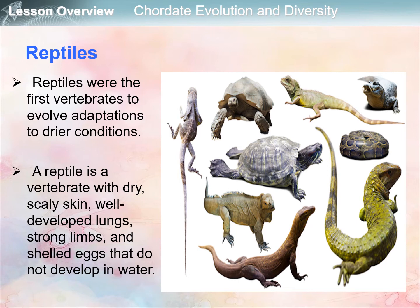Now let's move on to reptiles. Reptiles were the first vertebrates to evolve adaptations to drier conditions. A reptile is a vertebrate with dry, scaly skin, well-developed lungs, strong limbs — they don't have gills unlike some ancient amphibians — and shelled eggs that do not develop in water, unlike amphibians which require water for reproduction and development of their eggs.